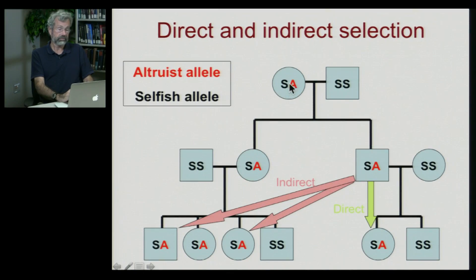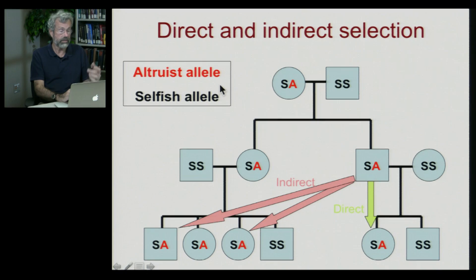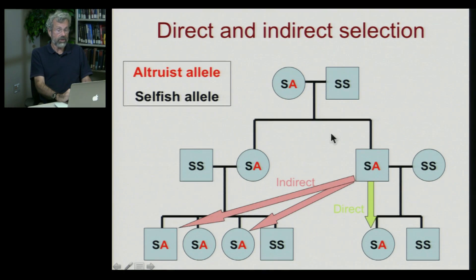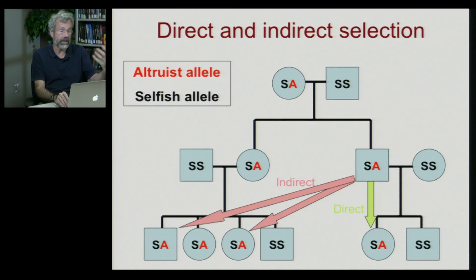Let's do a pedigree and look at two different alleles: the altruist allele, which we'll call A, and the selfish allele, which we'll call S. Let's pretend this altruist allele is new in the population — it's dominant, so it's expressed even in the heterozygote. We have a mating pair, one of whom has the altruistic gene. A proportion of the offspring also carry the altruistic gene. A member of this generation who possesses the altruistic gene can breed and pass that gene to the next generation, but could also help by enhancing the reproduction of its sibling, so the sibling has additional offspring, some of which will also carry that altruistic allele. This is how indirect selection can lead to the spread of these kinds of traits.